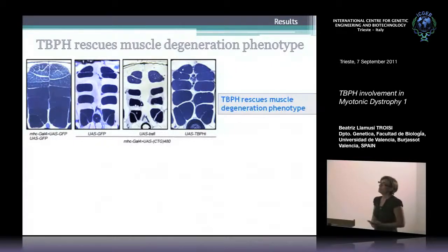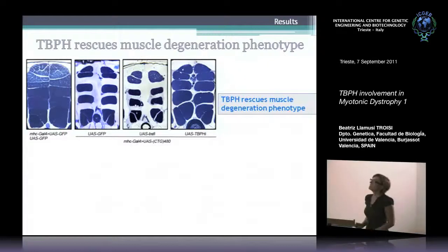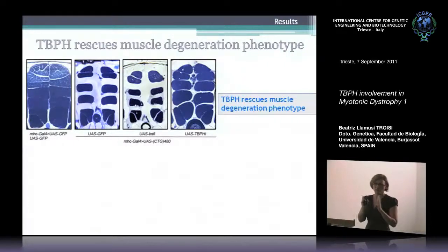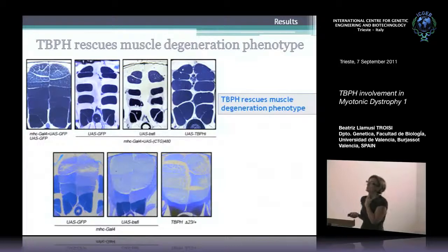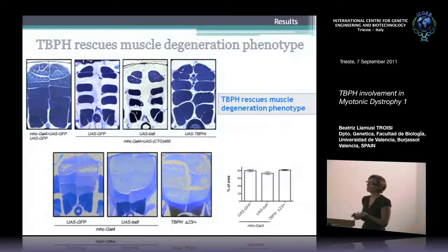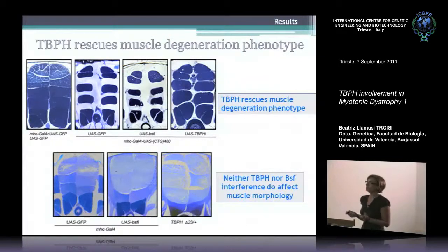This is very interesting because muscle wasting and muscle degeneration is one of the main symptoms of patients, which has not been explained before. These flies cannot fly — they have held-up wings. We cannot fully rescue the flies; it is improved muscle size, but they still cannot fly. We also looked at the BSF and TBPH RNAi and deletion flies — these muscles were normal. These two proteins are not involved in muscle development by themselves; neither TBPH nor BSF RNAi affects muscle morphology.